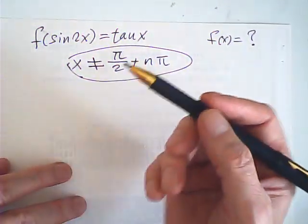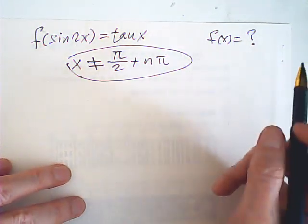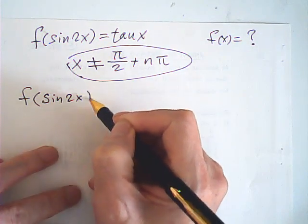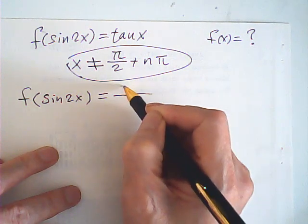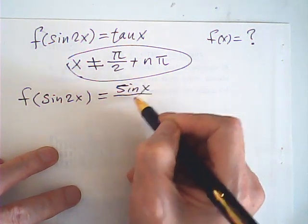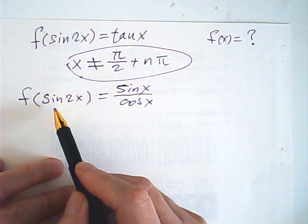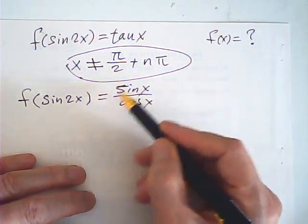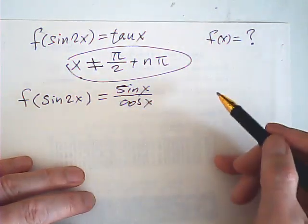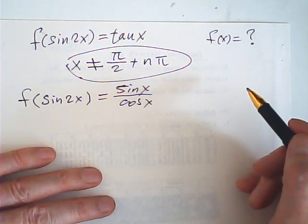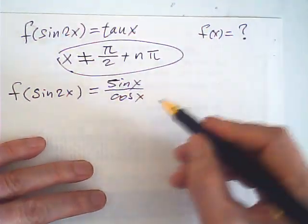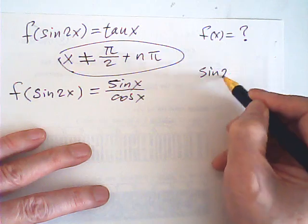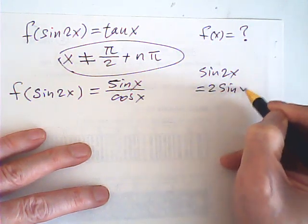Now I'll start method one. The goal is very clear: I want to change the right-hand side into an expression of sine 2x, then my function is found. We know that sine 2x is equal to 2 sine x cosine x.